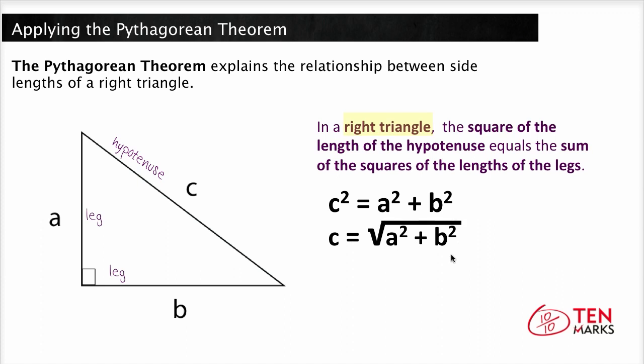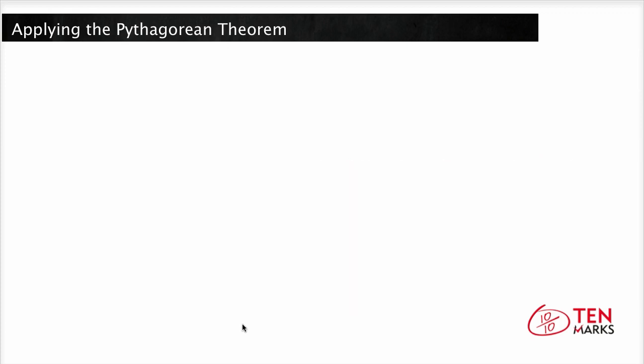Now you can use the Pythagorean theorem to find the side lengths of a right triangle or figures that contain right triangles in them. Just remember though that the Pythagorean theorem only works for right triangles. Now let's try an example.